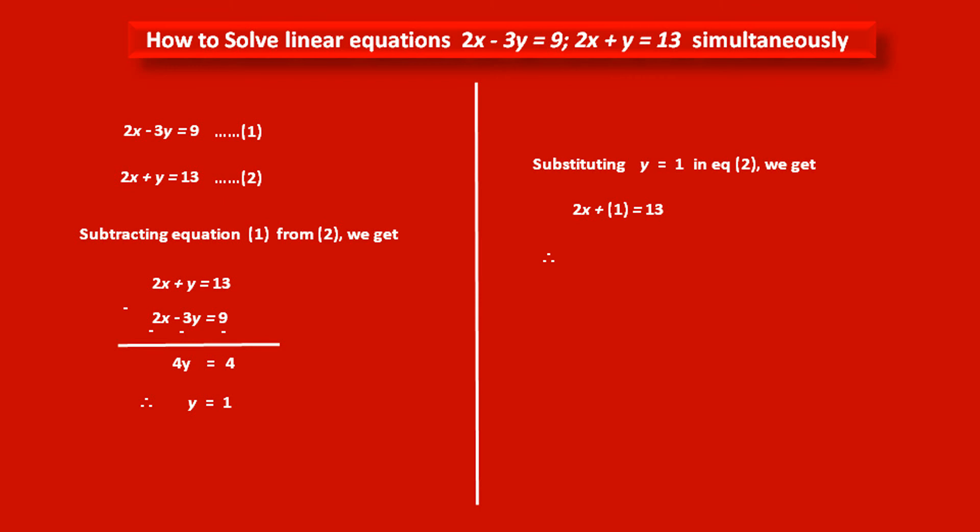Therefore, subtracting 1 from both sides, we get 2x equals 13 minus 1, that is 12. Therefore, dividing both sides by common factor 2, we get x equals 12 upon 2, that is 6.